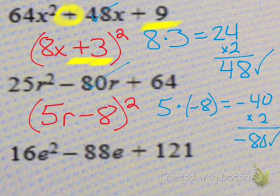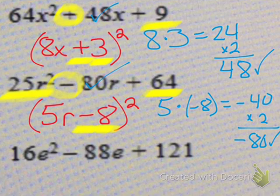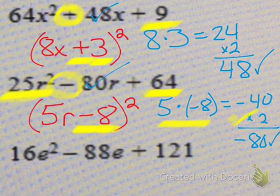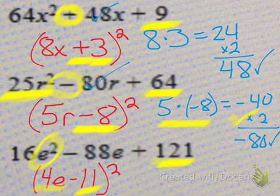The second answer is 5r minus 8 quantity squared. When you square root 25 you get 5, square root of r squared is r, and square root of 64 is 8. Because the 80 is negative, you need a negative sign in the middle. You can check: 5 times negative 8 is negative 40, doubled gives negative 80. And the last one: the answer is 4e minus 11 quantity squared. 4 times 4 is 16, e squared gives e squared, and 11 times 11 is 121. Because it is negative 88, the only way to add to a negative answer is if you're adding two negative numbers.